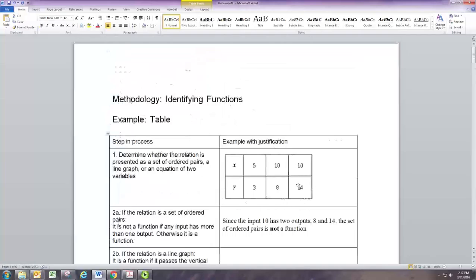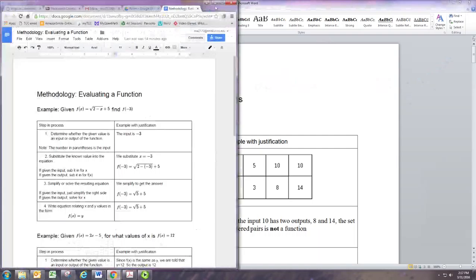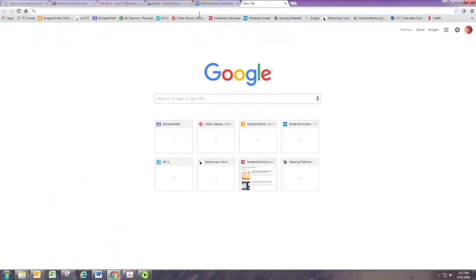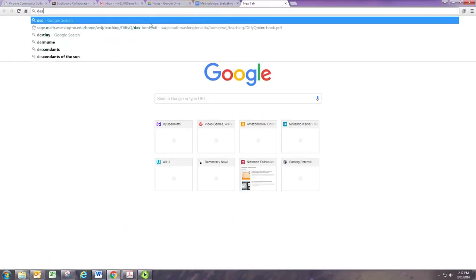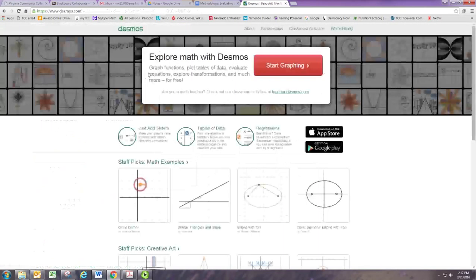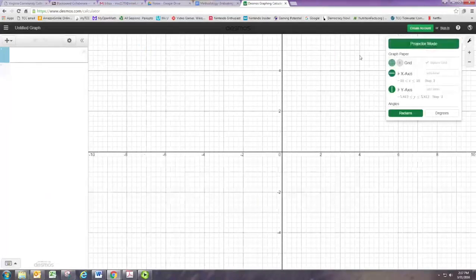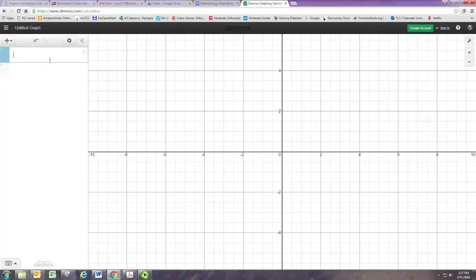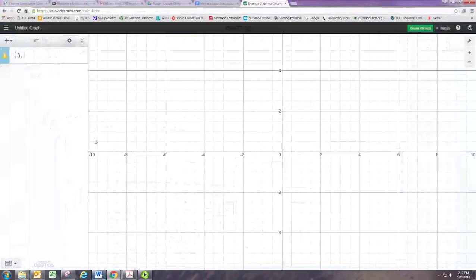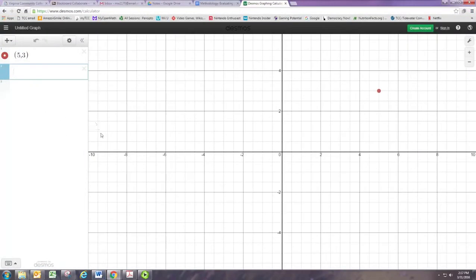So let's try to get a graph of this. Let's just use Desmos. And I think we were given 5, 3 and 10, 8 and 10, 14.